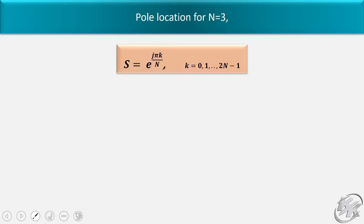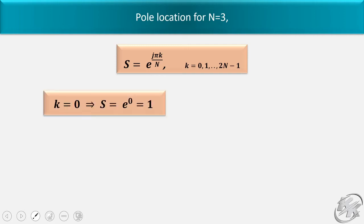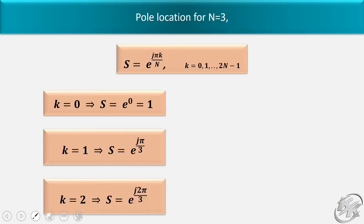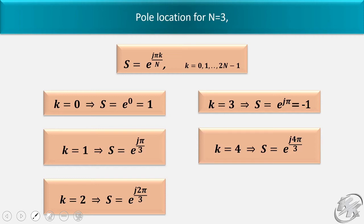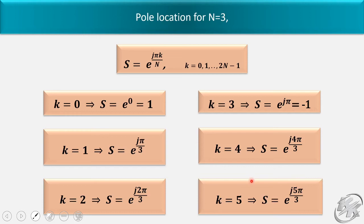Let's see the pole location for n equal to 3. For k equal to 0, s equal to e^0 equal to 1. For k equal to 1, s equal to e^(jπ/3). For k equal to 2, s equal to e^(j2π/3). For k equal to 3, s equal to e^(j3π/3) equal to e^(jπ) equal to -1. For k equal to 4, s equal to e^(j4π/3). For k equal to 5, s equal to e^(j5π/3). So for odd values of n, we always have poles at +1 and at -1.